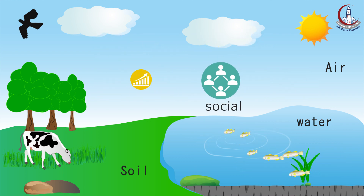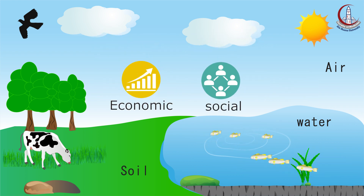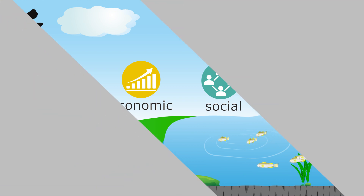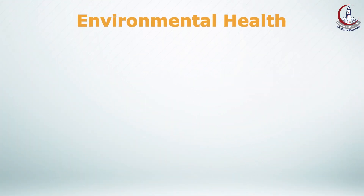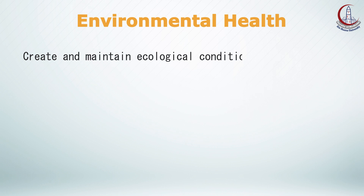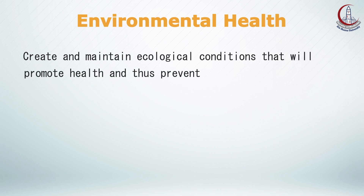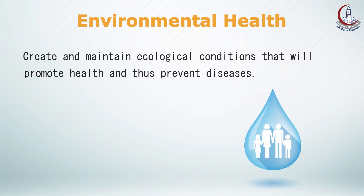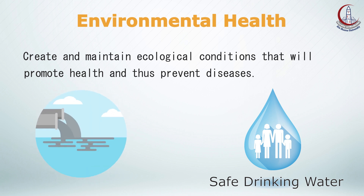Environment also includes the social and economic conditions under which we live. The purpose of environmental health is to create and maintain ecological conditions that will promote health and prevent diseases. One of the essential public health components is safe drinking water and sanitation.